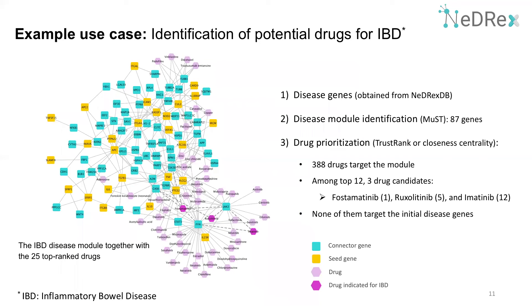To demonstrate the utility of the NeTrex platform, I show an example use case for inflammatory bowel disease. We start by selecting the IBD node and obtaining all associated genes from NeTrexDB, then use these genes as input to MUST to identify disease modules. In total, 288 drugs target this module. We then use genes from the derived disease module as seeds for drug prioritization algorithms. Three top-ranked drugs are supported by literature evidence for IBD: fostamatinib, which was reported to alleviate IBD-induced inflammatory damage in rats; the JAK inhibitor filgotinib, reported to ameliorate ulcerative colitis in a mouse model; and imatinib, which has been reported to induce remission in IBD patients. None of these drugs target the initial disease seed genes.